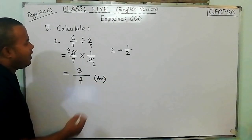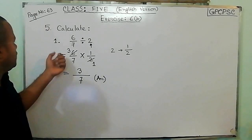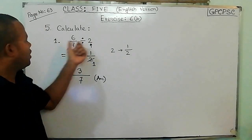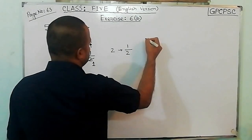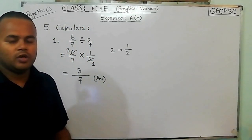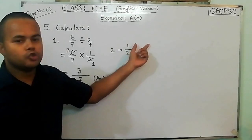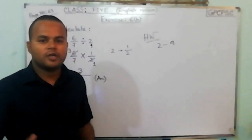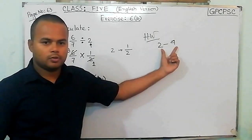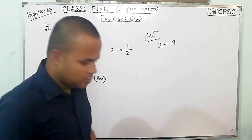Now you have similar types of problems in your book. You have to look from number 1 to number 4 — that will be your home task. You will practice from number 2 to 4. Your home task will be from number 2 to 4. So let's try another problem.